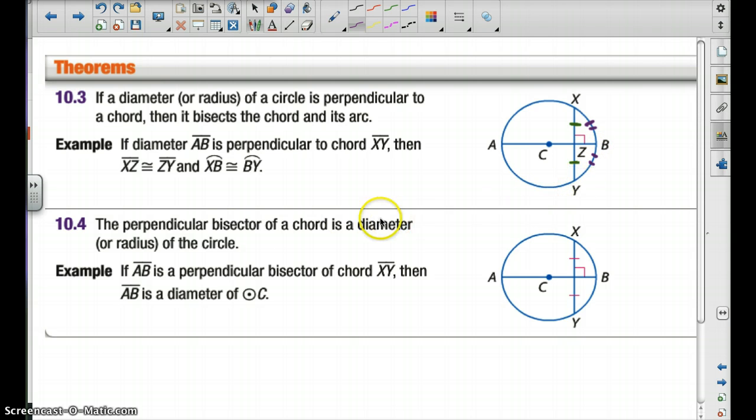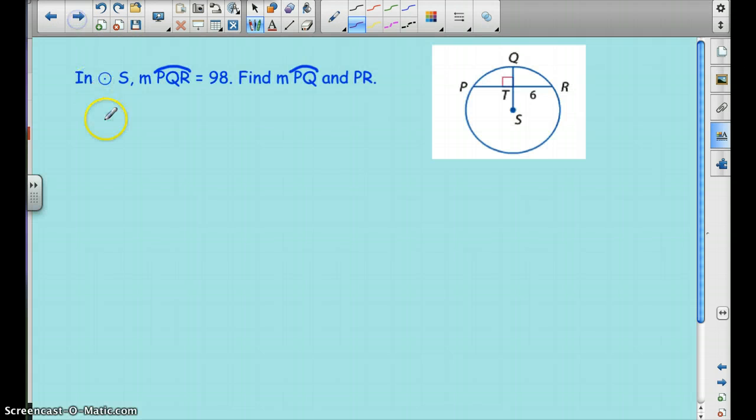And the second theorem, 10.4, says if AB is a perpendicular bisector of chord XY, so let's say that this line is bisecting. Perpendicular bisector means we create a 90 degrees and we cut these two in half. Then AB is the diameter, if that happens. So let's use these theorems to solve some problems.